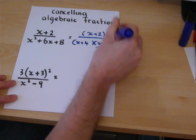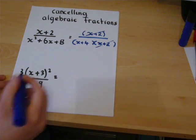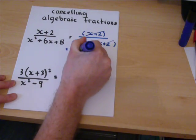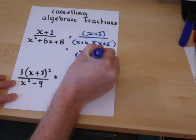And then the things that are the same, top and bottom, cancel out. And then we're left with one over x plus four.